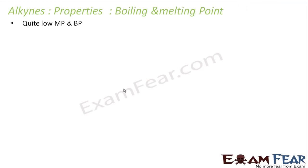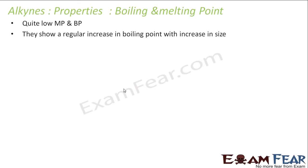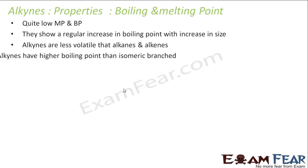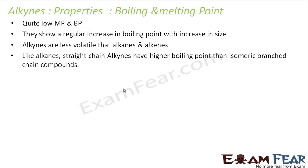We will talk about boiling and melting points. Alkynes have quite low melting and boiling points, and they show a regular increase in melting and boiling point. They are less volatile than alkenes. Like alkenes, the straight-chain alkynes have a higher boiling point than the branched ones.